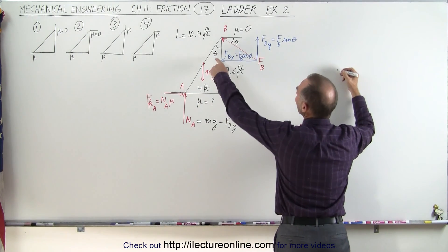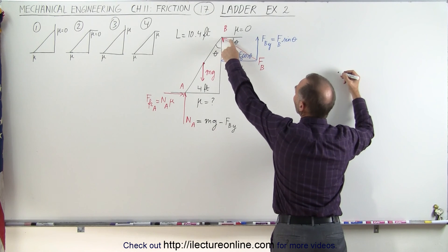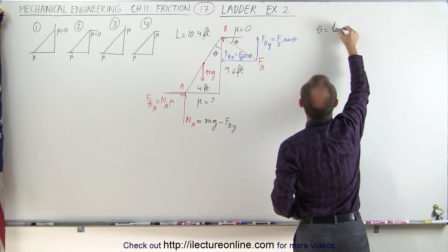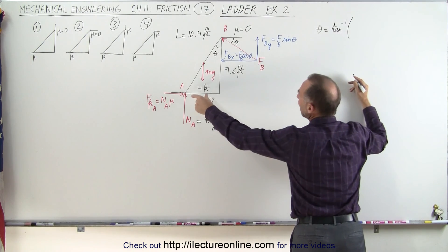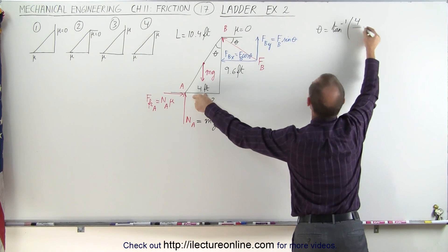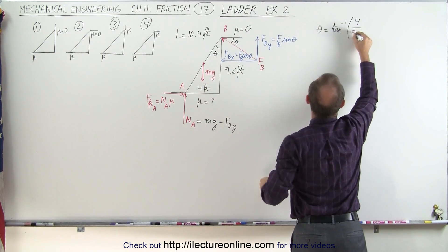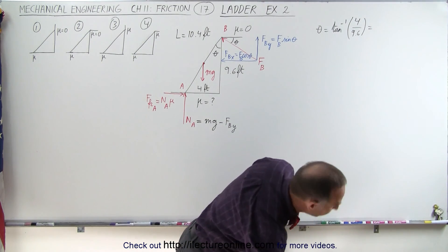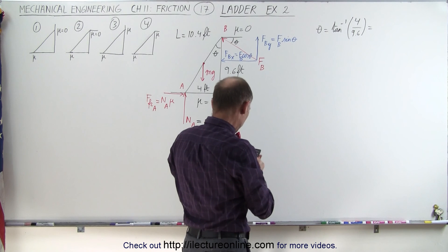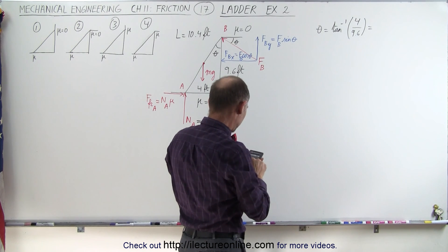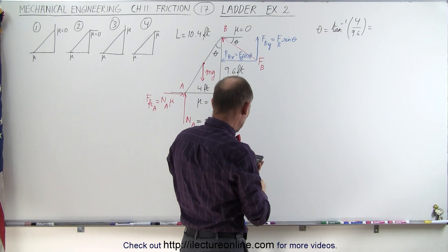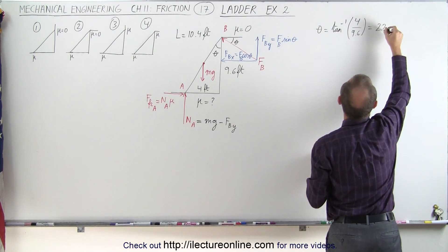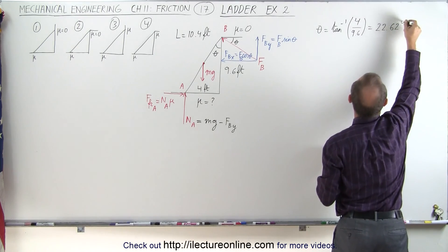We can say that the angle theta here is the same as the angle theta over there. Theta can be found by taking the arctan of the opposite side, which is 4 feet, divided by the adjacent side, which is 9.6 feet. So that gives us the angle relative to the vertical: 4 divided by 9.6, taking the inverse tangent, we get 22.62 degrees.